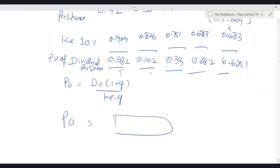Just add all these present values: 6.621 plus 0.382 plus 0.39 plus 0.412 plus 0.382, I'm getting 8.19.